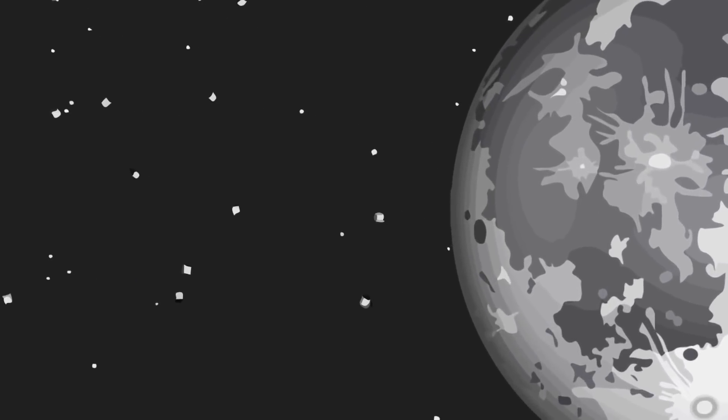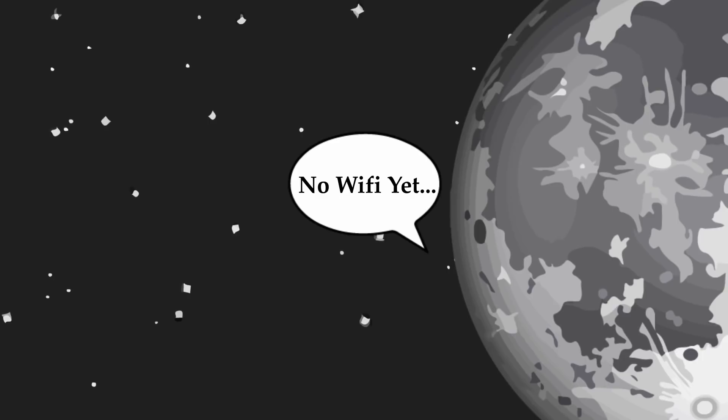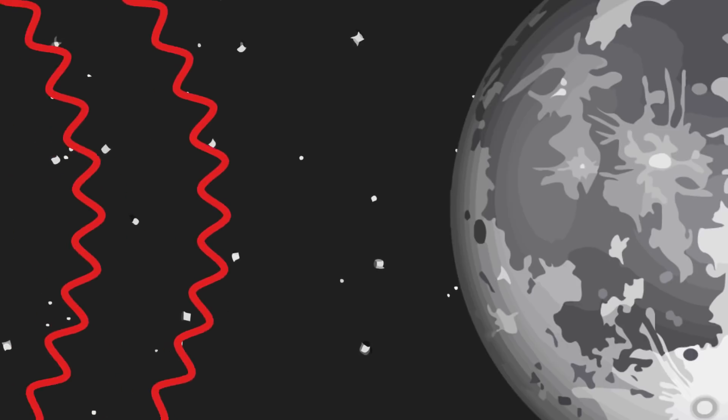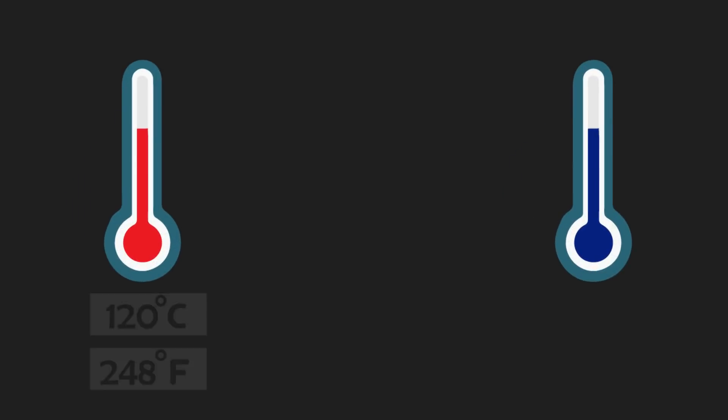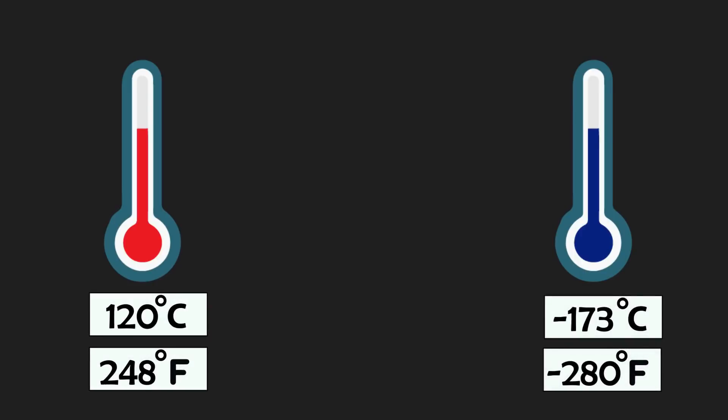It may be our closest space neighbour, but with a lack of conditions to sustain human settlement, it's going to be difficult. The lack of atmosphere on the Moon brings hazards from cosmic radiation to deadly micrometeorites. The temperature will also be a problem, changing from 120 degrees during the day to minus 173 at night.